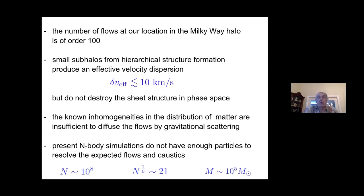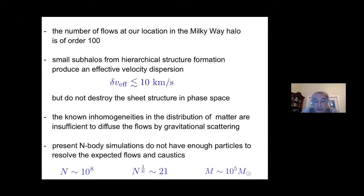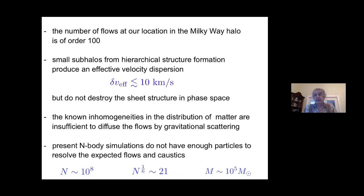Regarding N-body simulations: although they may have up to 10^8 bodies per galactic halo, that is actually a small number because phase space is six-dimensional. The sixth root of 10^8 is 21, so you only have 21 bodies per dimension of phase space — very poor resolution. Also, the mass per simulation particle is of order 10^5 solar masses, enormously larger than any dark matter particle candidate. So N-body simulations don't have enough particles to resolve the expected flows and caustics.